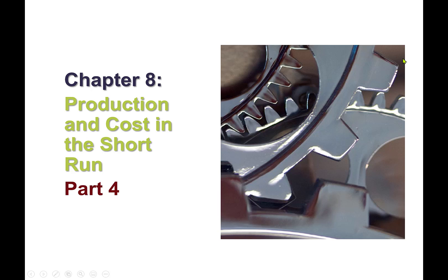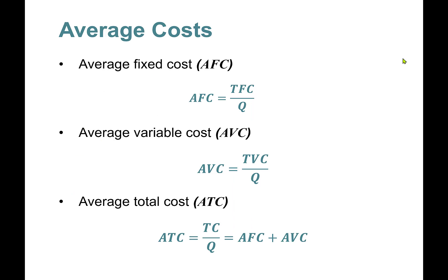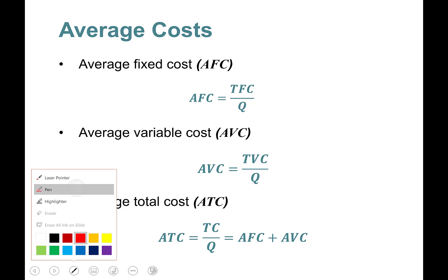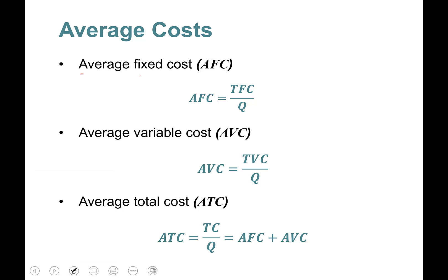Hello everyone, this is chapter 8 part 4. In this part we'll learn about average costs. Let's get started with average fixed cost. AFC is total fixed cost divided by quantity.